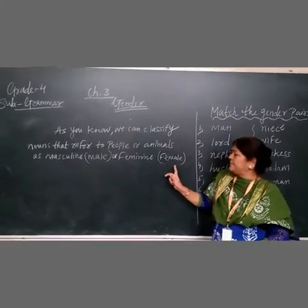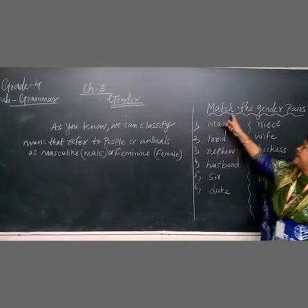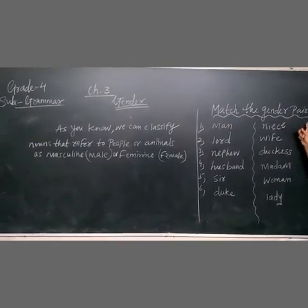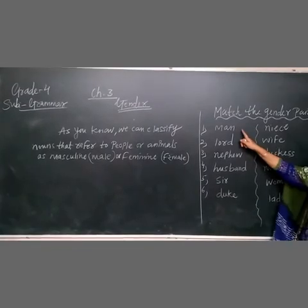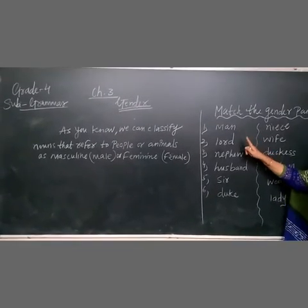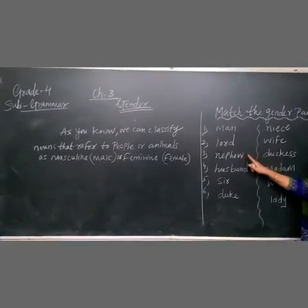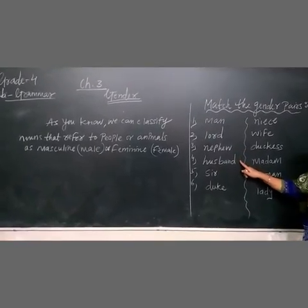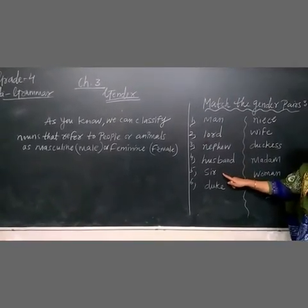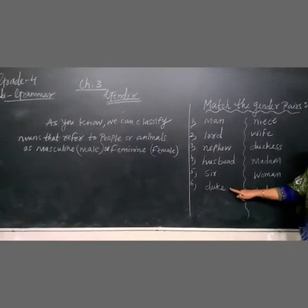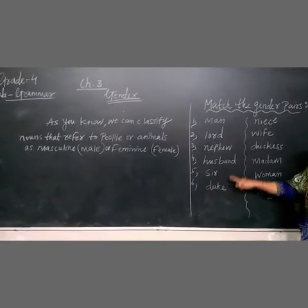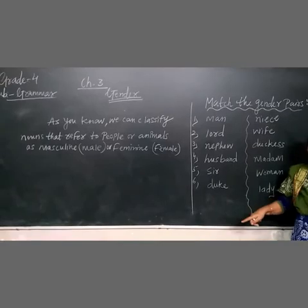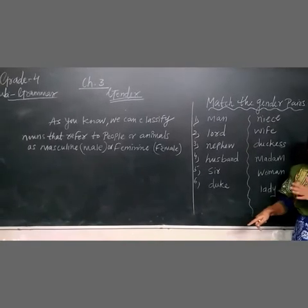Now I have written here a matching gender exercise. Number one: man. Number two: lord. Number three: masculine — nephew. Number four: husband. Number five: sir. Number six: duck. They are all masculine. So now we match with proper feminine.